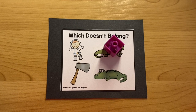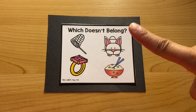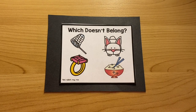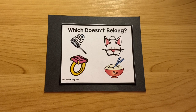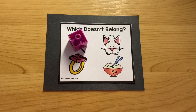Next one. Net. Rabbit. Ring. Rice. Which word doesn't belong? Net. That's right. Net doesn't belong because net begins with the sound N. And the rest of the words begin with the sound R. Good job.